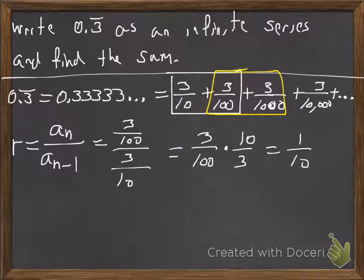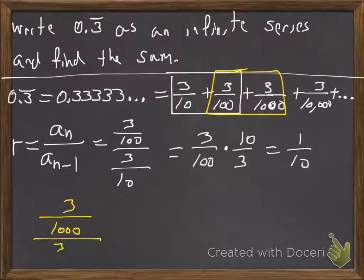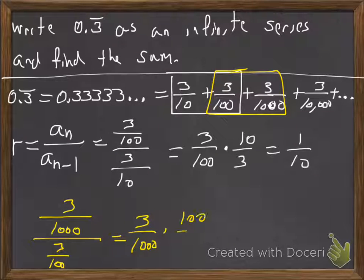Now in yellow there, I've grouped the second two together. And we could check there. So 3 over 1,000 over 3 over 100. So we'll keep, flip, and change the sign.